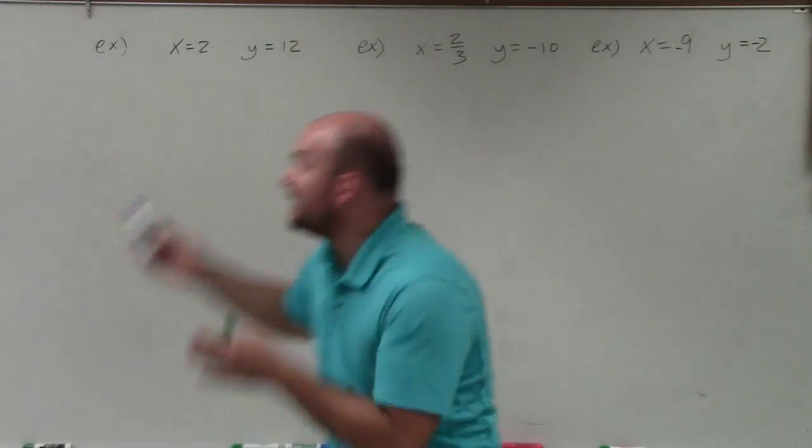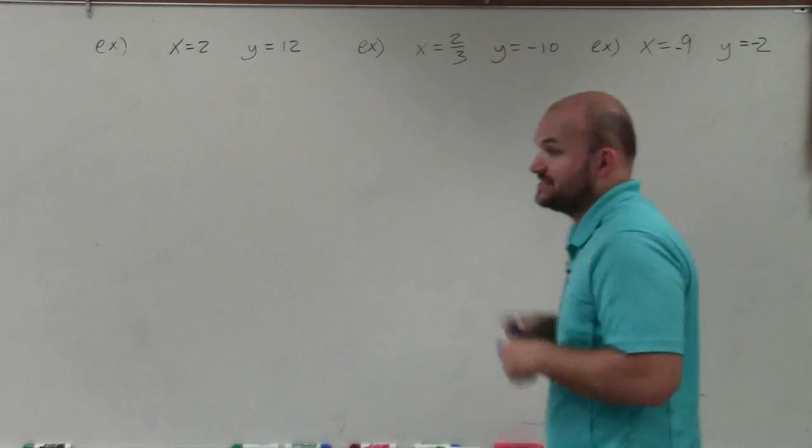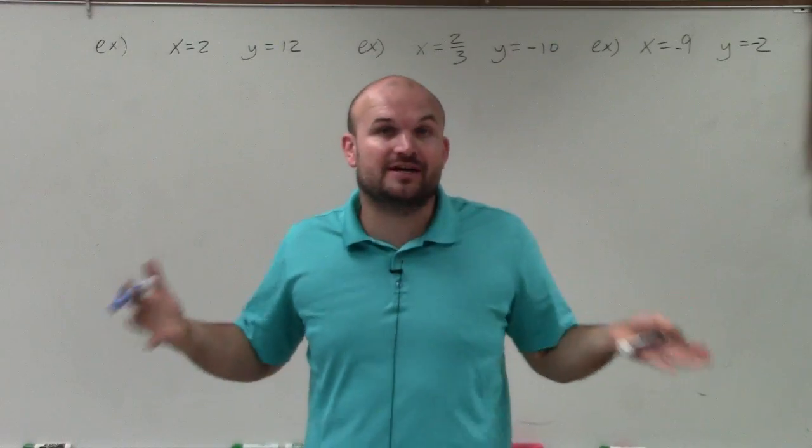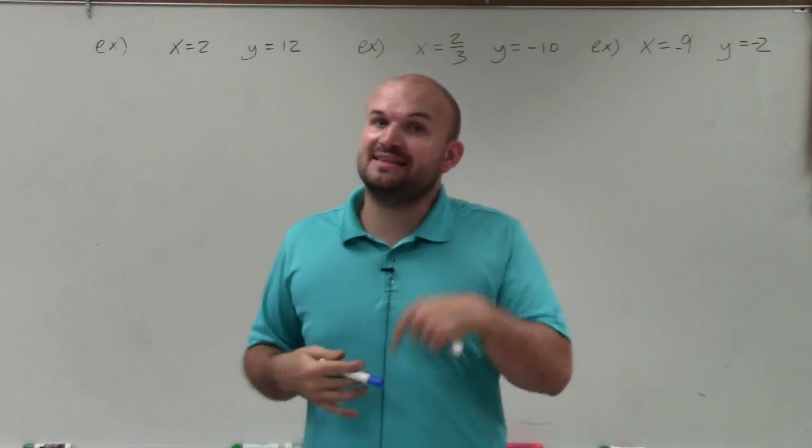So what they're saying is they're giving us the value of x and they're giving us the y. And they're saying that these two variables vary directly. Now write an equation to represent that they vary directly, as well as find the constant k.